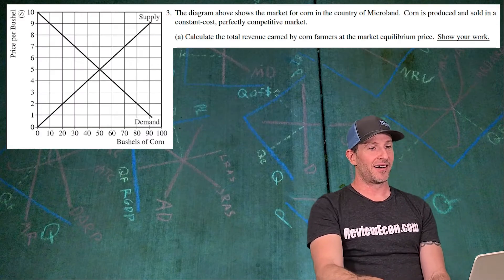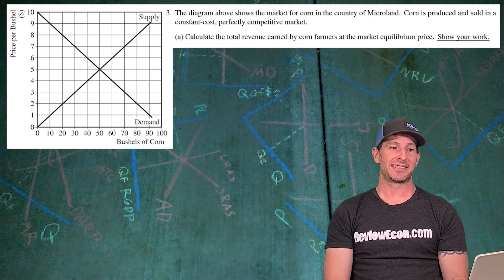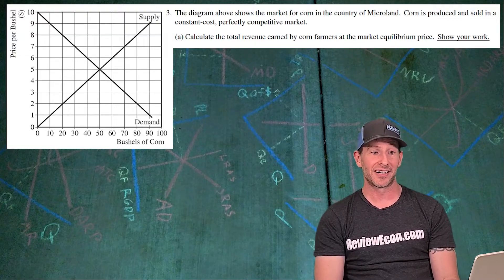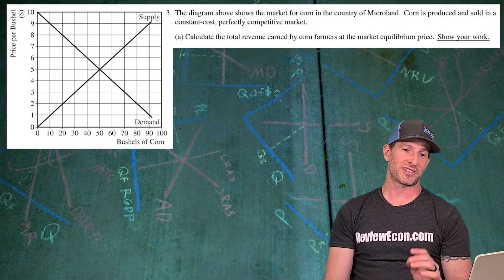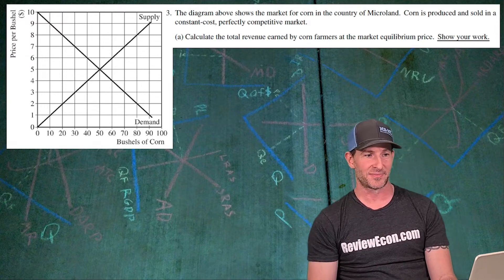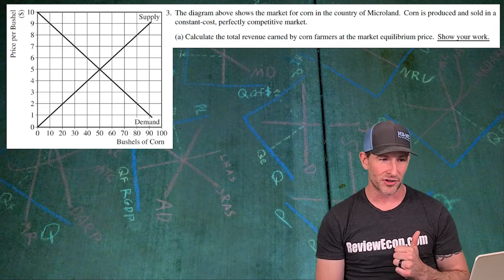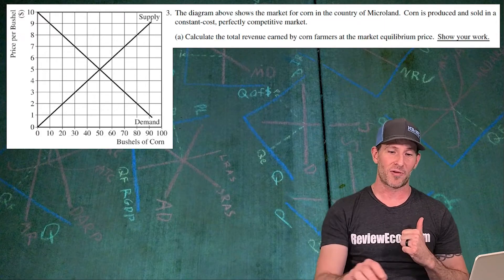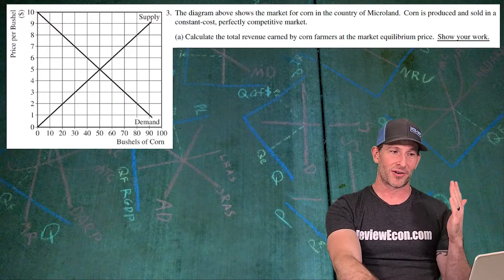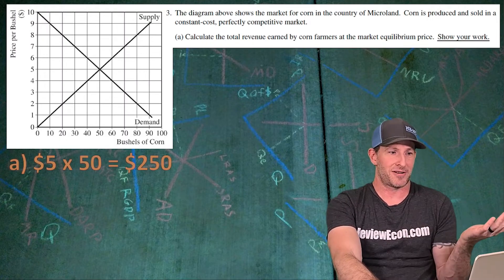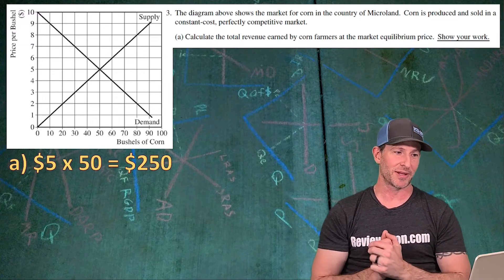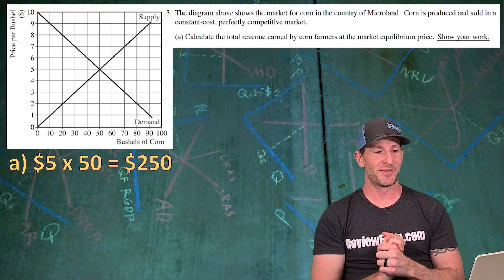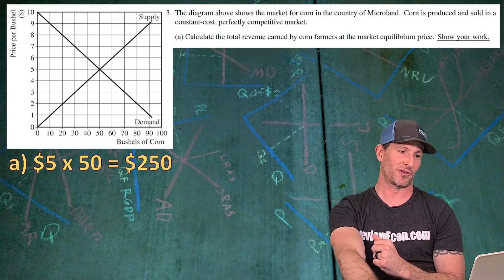Last question: the diagram shows the market for corn in the country of Microland. Corn is produced and sold in a constant cost, perfectly competitive market. First, calculate total revenue earned by corn farmers at the market equilibrium price. Total revenue is price times quantity. The equilibrium price is $5 and the equilibrium quantity is 50, giving us $250 of total revenue.